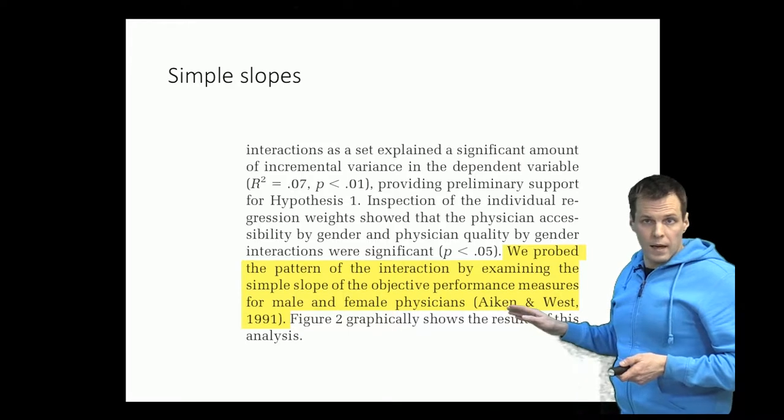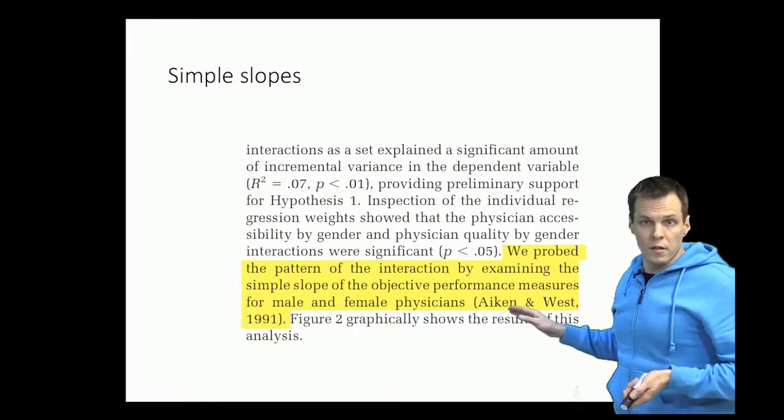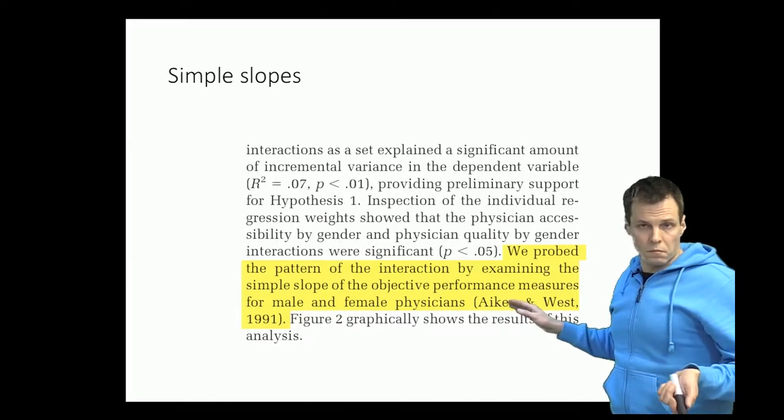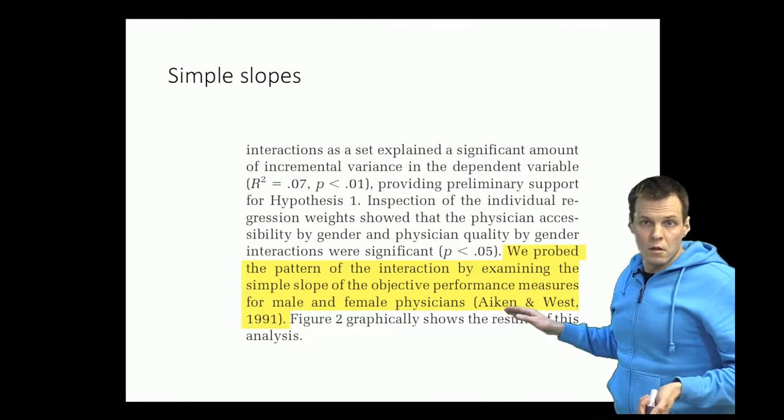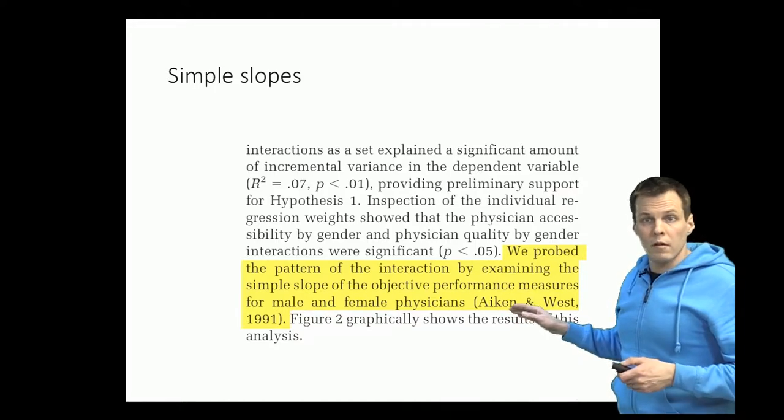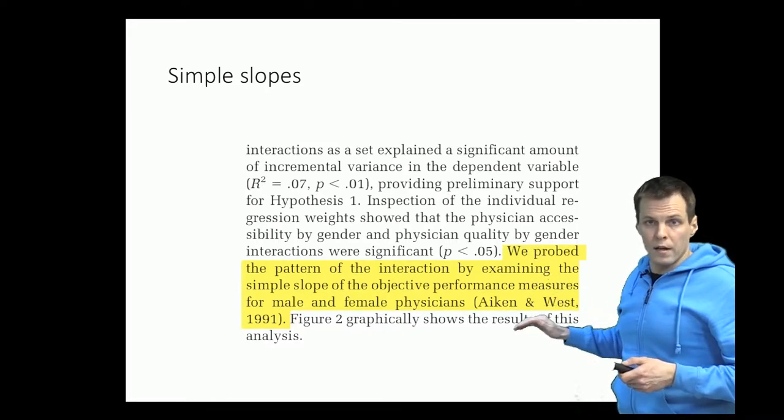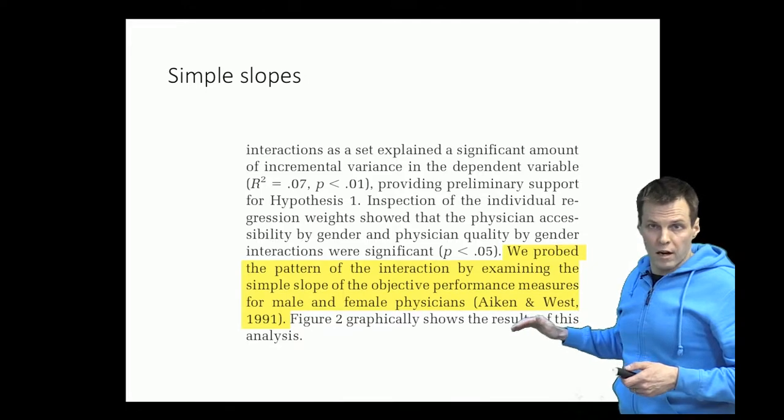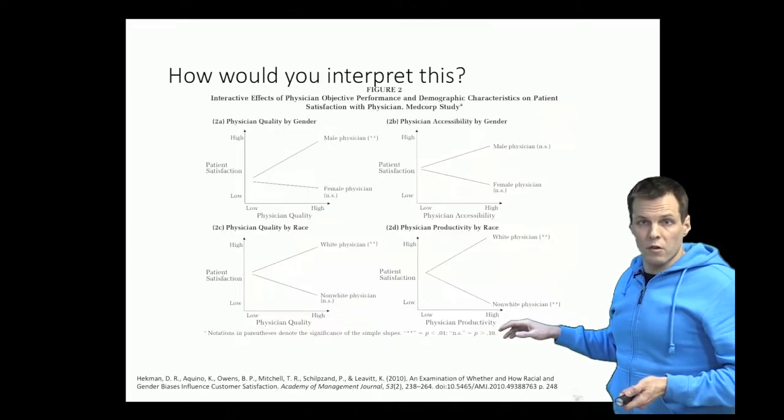In here they had gender and race of the physician as moderators and they were interested in the quality attributes and their effects on satisfaction. So we calculate one regression line where we hold the gender variable at 0 and then we calculate one other regression line where we hold the gender variable at 1 for example. And that allows us to plot the interactions.